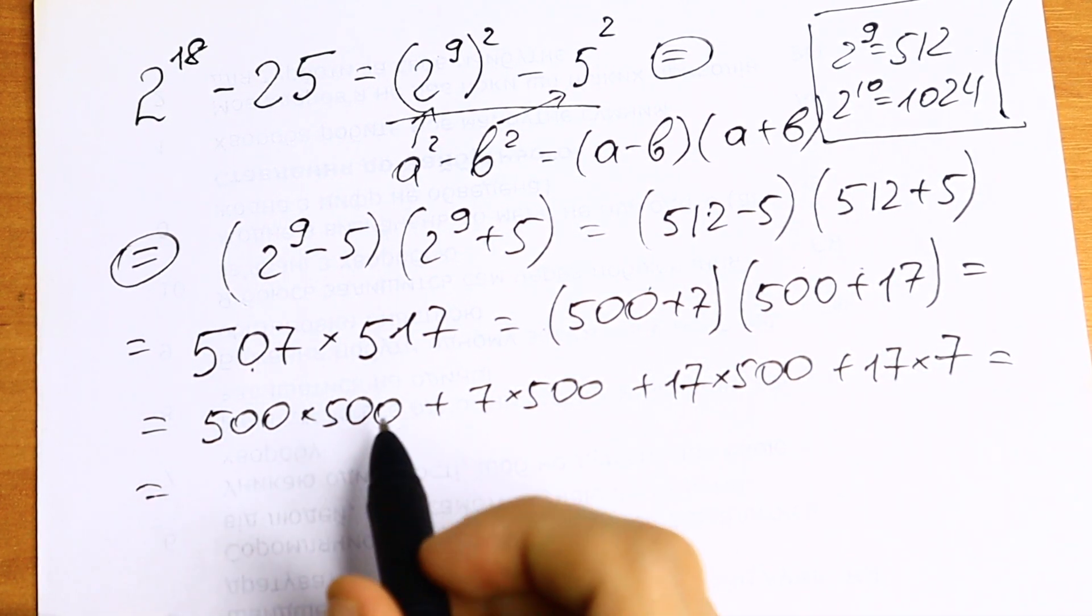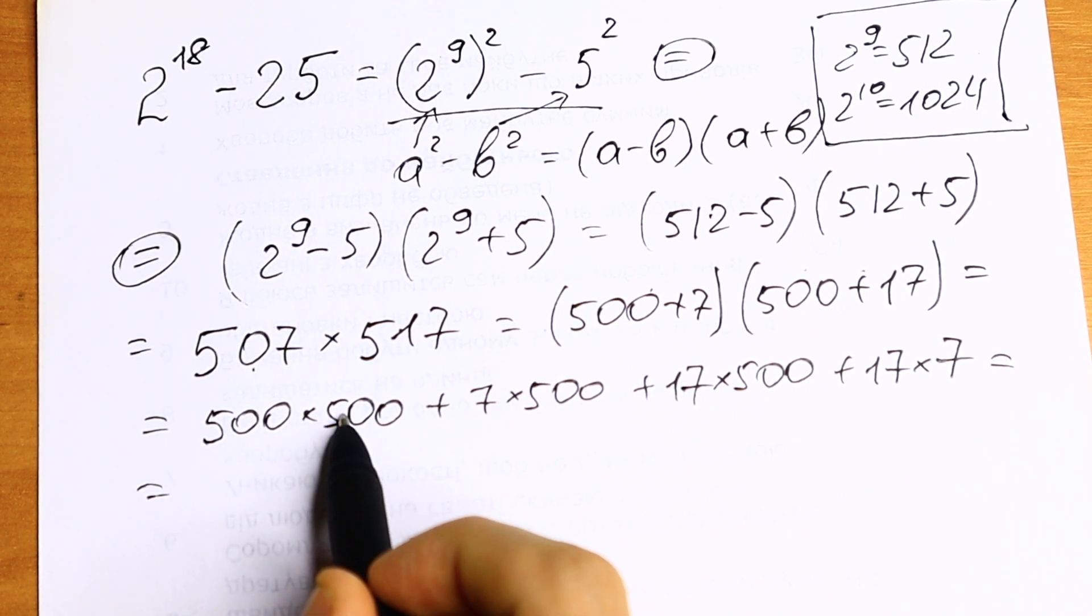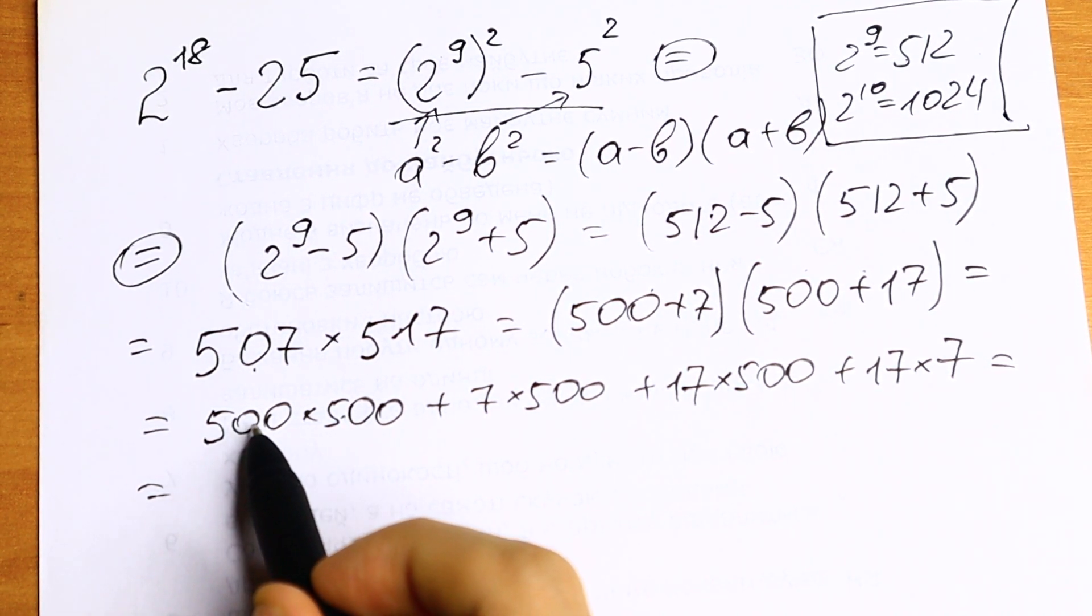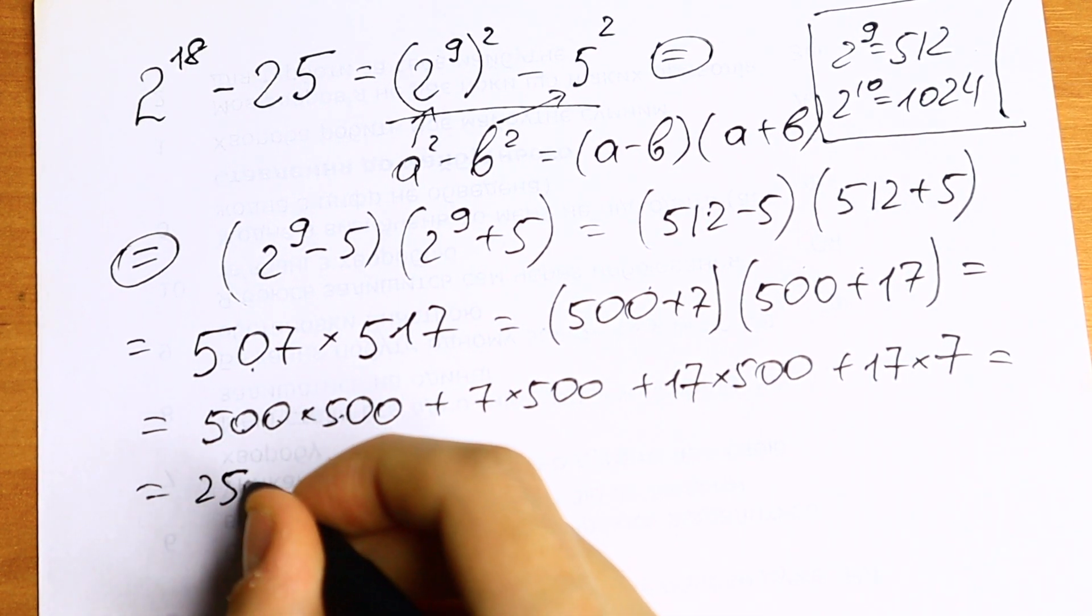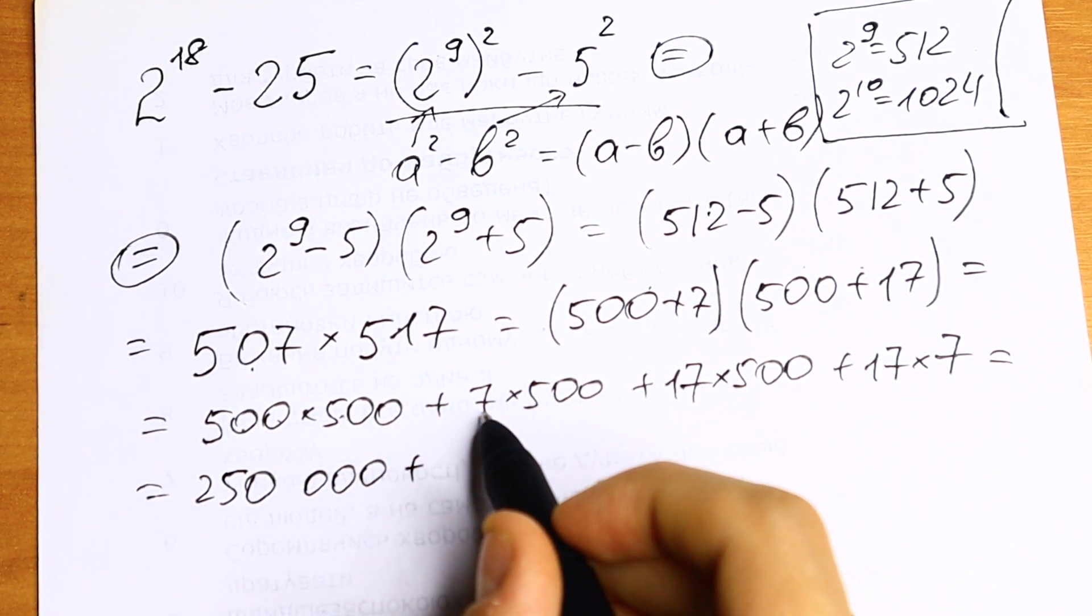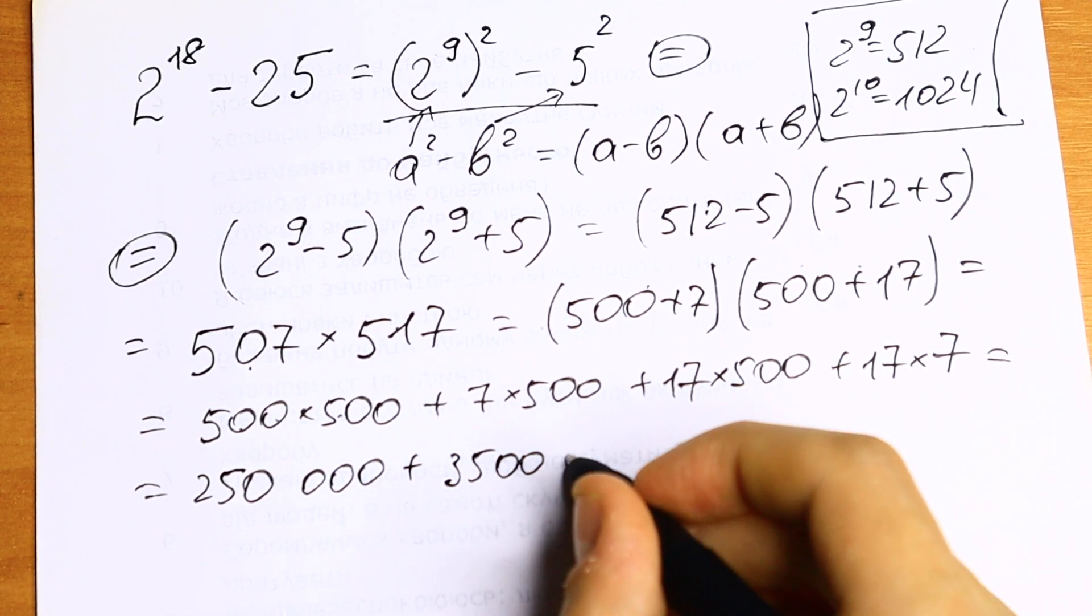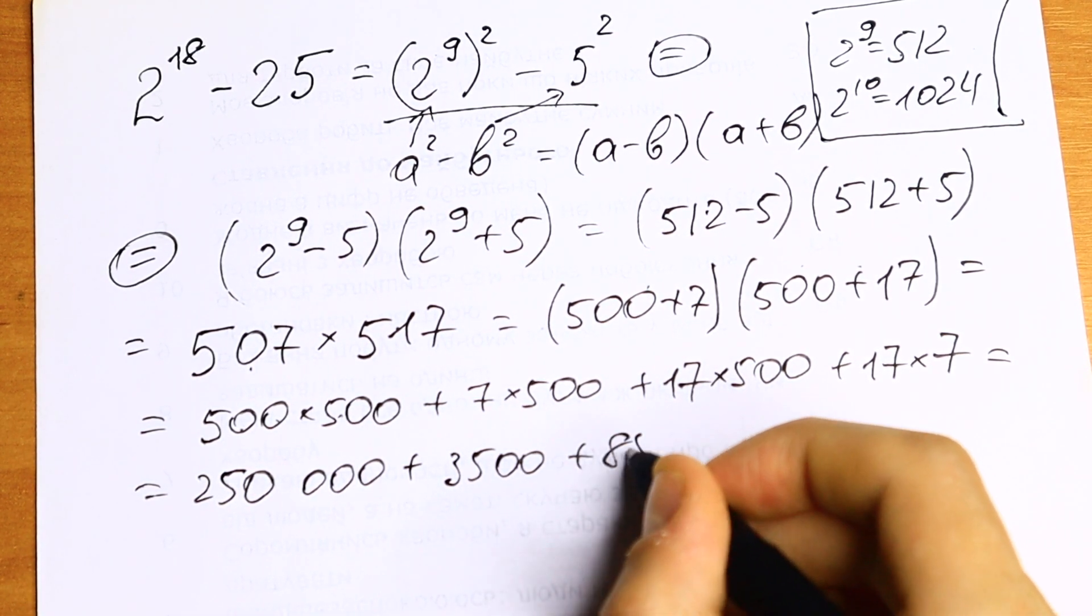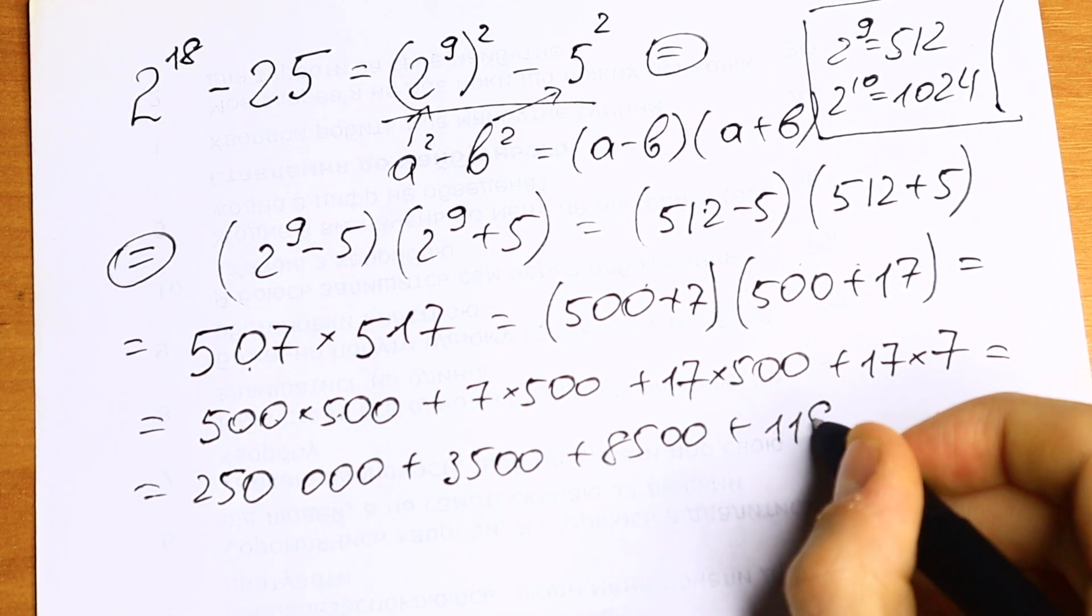And we can easily find these elements step by step. Right here we have 5 times 5 is 25. But with this 25 we will have 4 zeros: 1, 2, 3, 4. 250,000. Plus right here we will have 3,500. Plus right here 8,500. And plus 119.